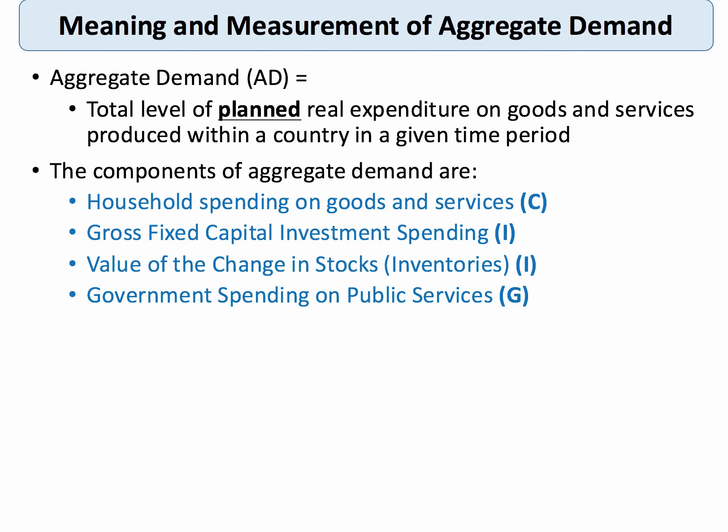Then we add in G — government spending on public services. This is spending by the government on state-provided goods and services such as public goods and merit goods. Decisions on how much the government will spend each year are naturally affected by key developments in the economy, political objectives, and population trends. So we have C plus I plus G — consumption spending plus investment plus government spending.